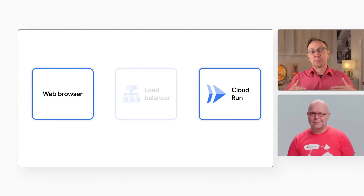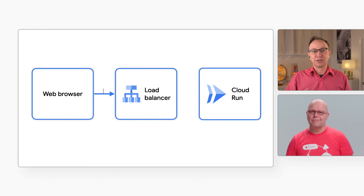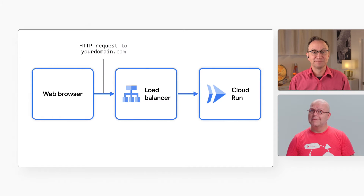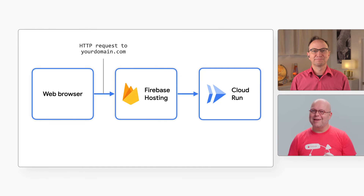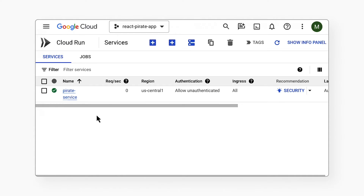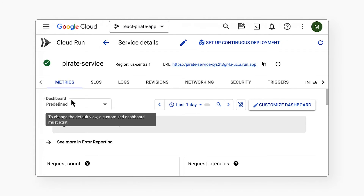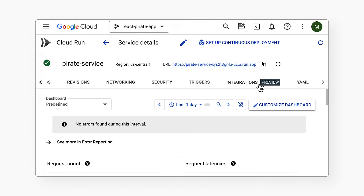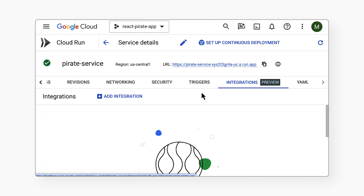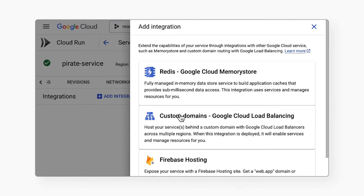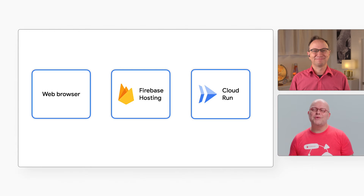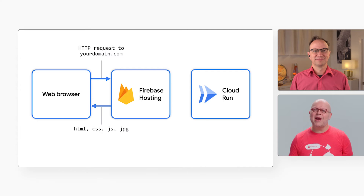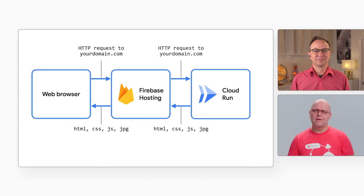If you need a presentable URL, you can add a load balancer in front of your Cloud Run service, or you could use Firebase Hosting — without the extra cost and complexity of a load balancer. It's easy to set up: just go to your Cloud Run service, click Integrations, click Add Integration, and pick Integration with Firebase Hosting. That gives you the default setup where all traffic to your domain gets forwarded to your Cloud Run service.